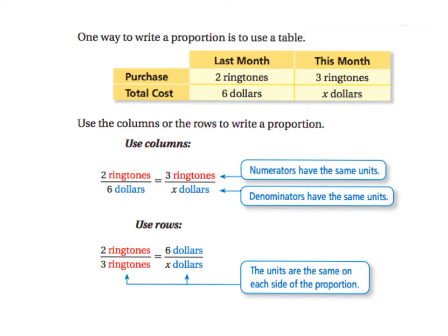One way to write a proportion is to use a table. So copy this table into your notebook. It says last month and this month, so we're comparing two months' purchase cost and the total cost for ringtones. So last month you got two ringtones for $6, and this month you can get three ringtones for $x. And it doesn't say how many x is, so that's a bit of a mystery.